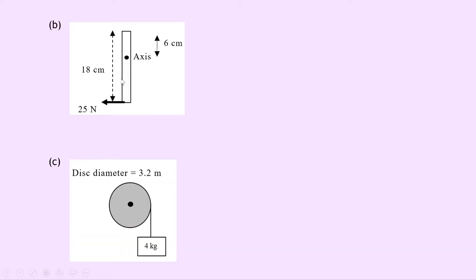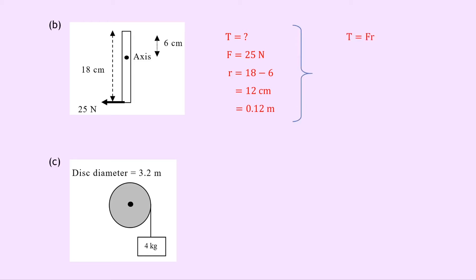For part B, we have a different shape with a force of 25 newtons. The whole length is 18 centimetres, but we only want the distance from the axis where the force is applied. Since that offset is 6 centimetres, we subtract: 18 minus 6 gives 12 centimetres, or 0.12 metres. Using T equals FR and substituting gives us 25 times 0.12, which equals 3 newton metres.